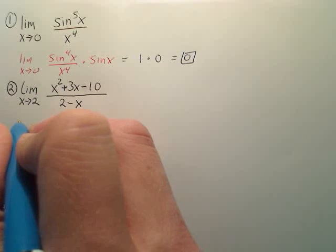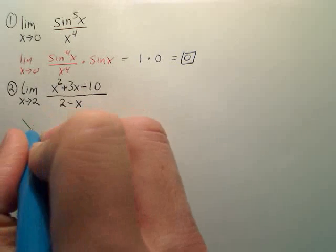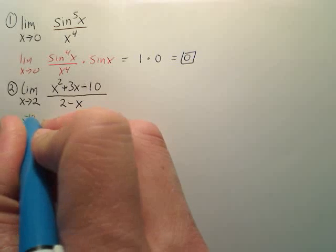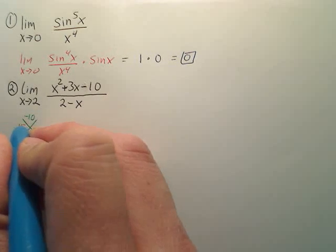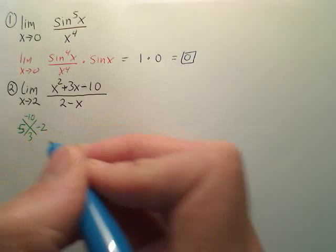So what we're going to do is we're going to rewrite it. Actually we're going to factor. So I'm going to put negative 10 on top, 3 on bottom. That would be a positive 5 and a negative 2.